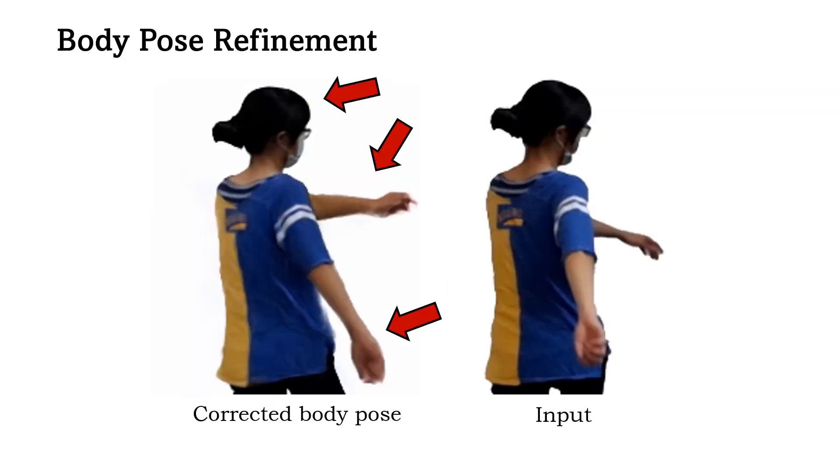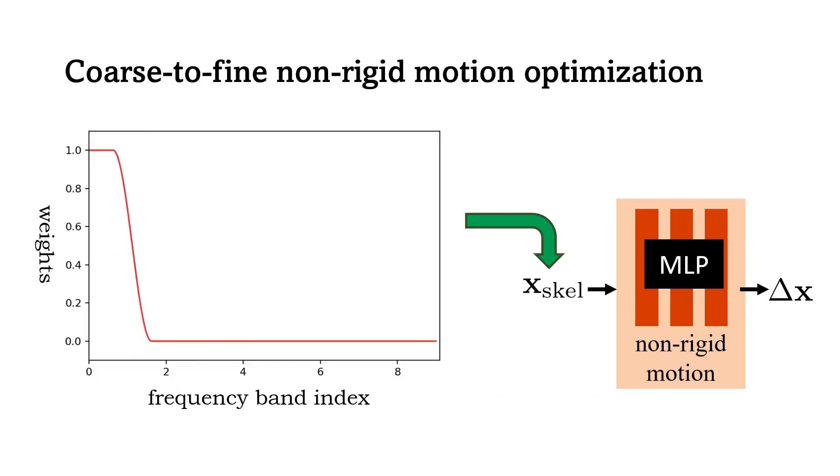We additionally optimize for body poses. This video shows how the pose is corrected. Finally, to achieve robust view generalization, we enforce coarse-to-fine optimization on non-rigid motion by applying truncated band window to the input of the latent MLP. This animation shows how we increase the window size as the optimization proceeds.